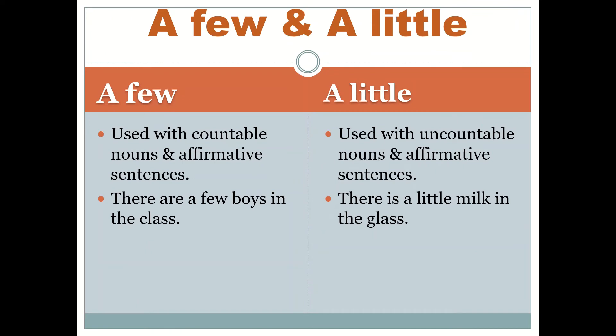Here we have 'a few' and 'a little.' 'A few' is used with countable nouns in affirmative sentences — for example: 'There are a few coins in the glass.' 'A little' is used with uncountable nouns — for example: 'There is a little milk in the glass.'